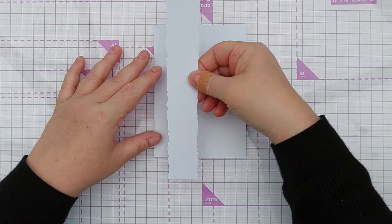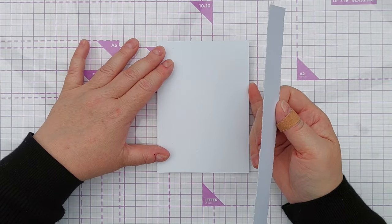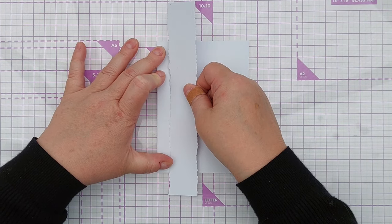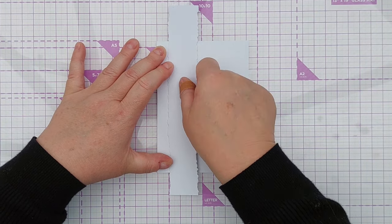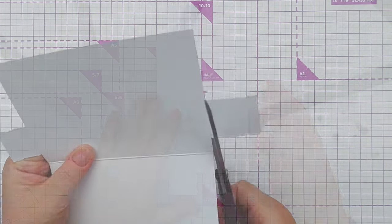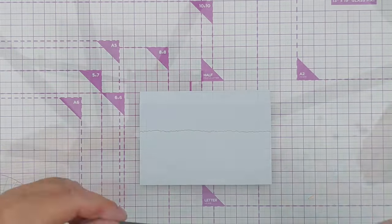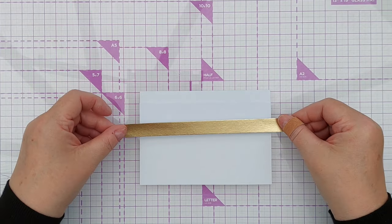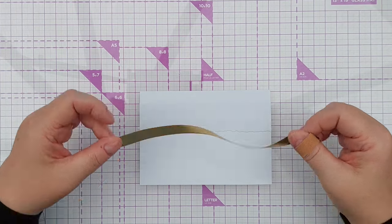So I'm using tape runner to stick this to my card. Again I can line my card up and use this to line up my torn edge strip roughly, and now I can snip off the overhang.